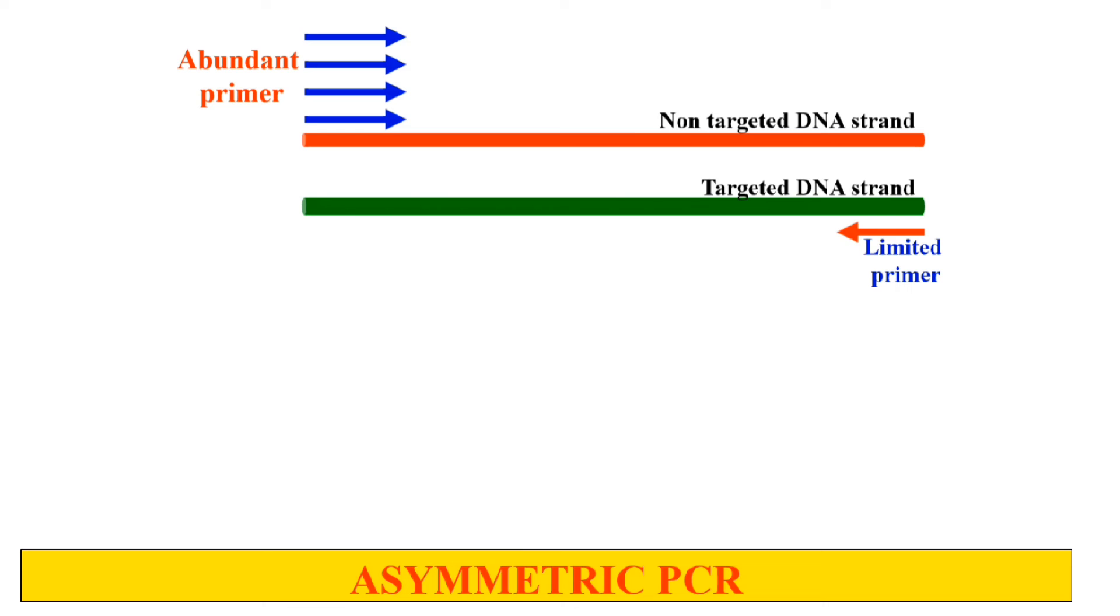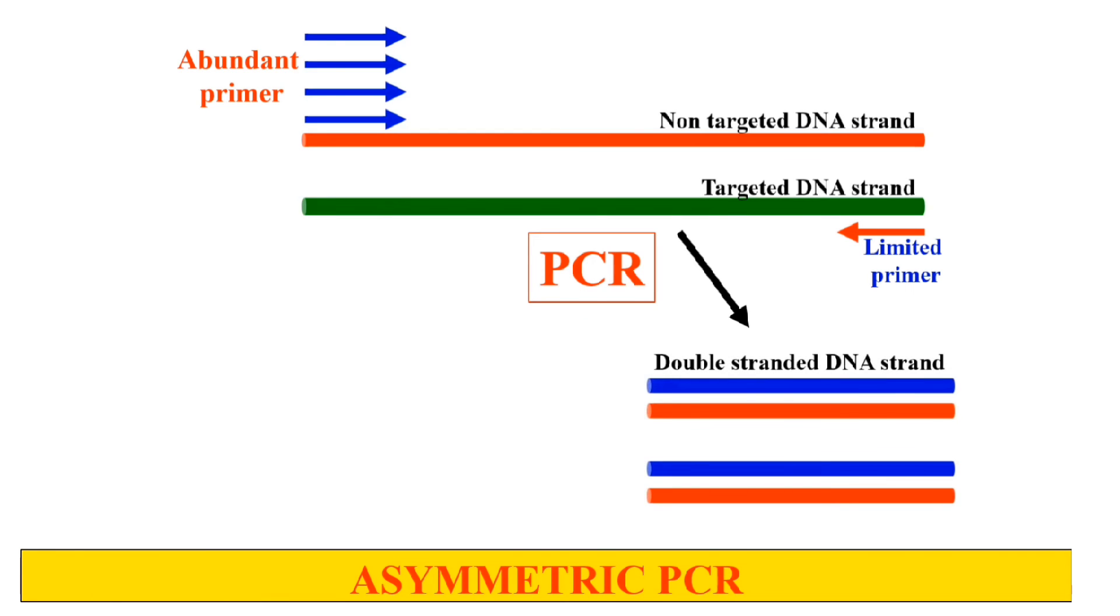Now what will happen after PCR? The limited primers will get exhausted, and we will have only a few non-targeted DNA strands amplified because the primers will be exhausted. But in the case of the targeted DNA strand, we have abundant primers.